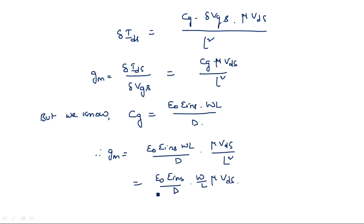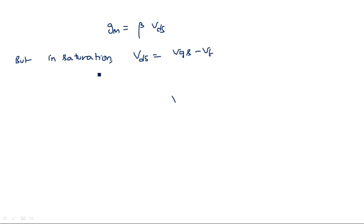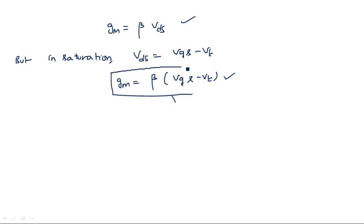All these terms — Epsilon-0, Epsilon-insulator, W, mu, D, and L — can be grouped into a constant called beta. So we can say simply Gm equals beta times Vds. But in saturation, at saturation Vds equals Vgs minus Vt, therefore Gm equals beta times (Vgs minus Vt). Both formulas are accepted; you can use either expression. This is the expression for transconductance.